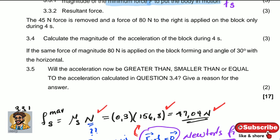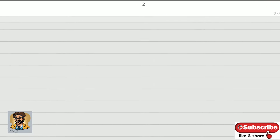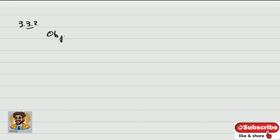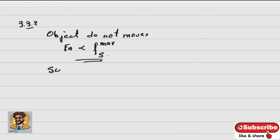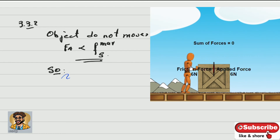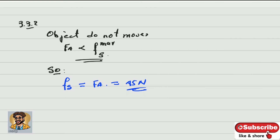Question 3.3.2: calculate the resultant force. The object does NOT move, because the applied force of 45 N is smaller than the maximum static frictional force of 47.04 N. Therefore, the static frictional force equals the applied force: fs = 45 N.